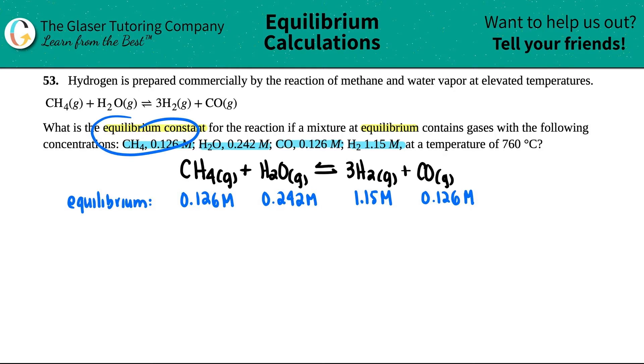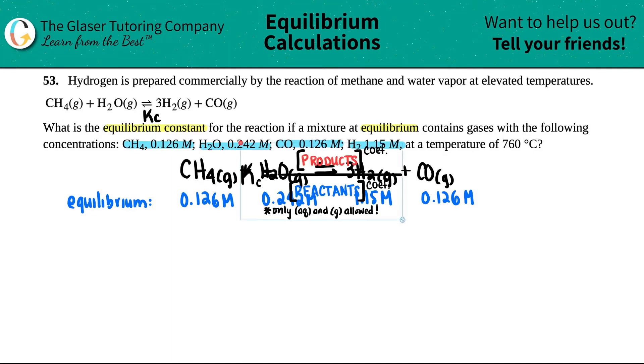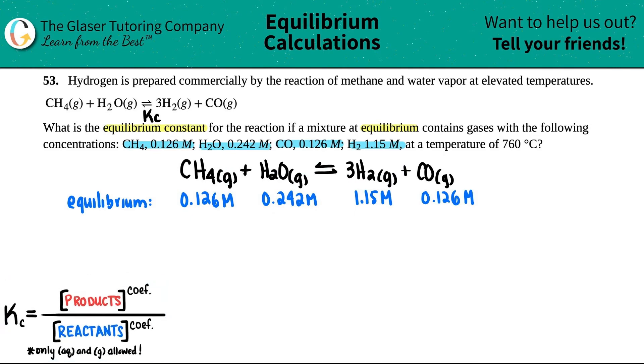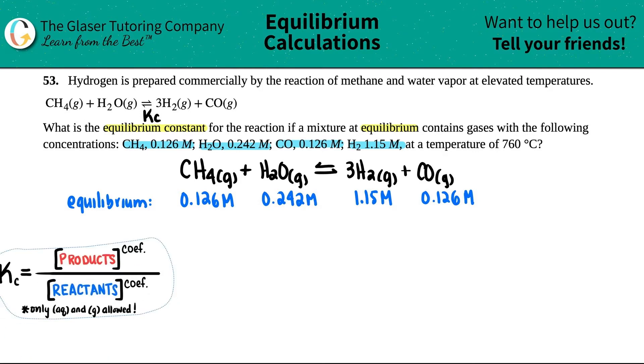So they wanted to find out what the equilibrium constant was. Remember, equilibrium constant is the capital K. And they gave me all molarity values, so that's concentration. So we're specifically looking for Kc. We know what the Kc formula is. It's this one right here. It's products divided by reactants. So we have to write a more specific formula.